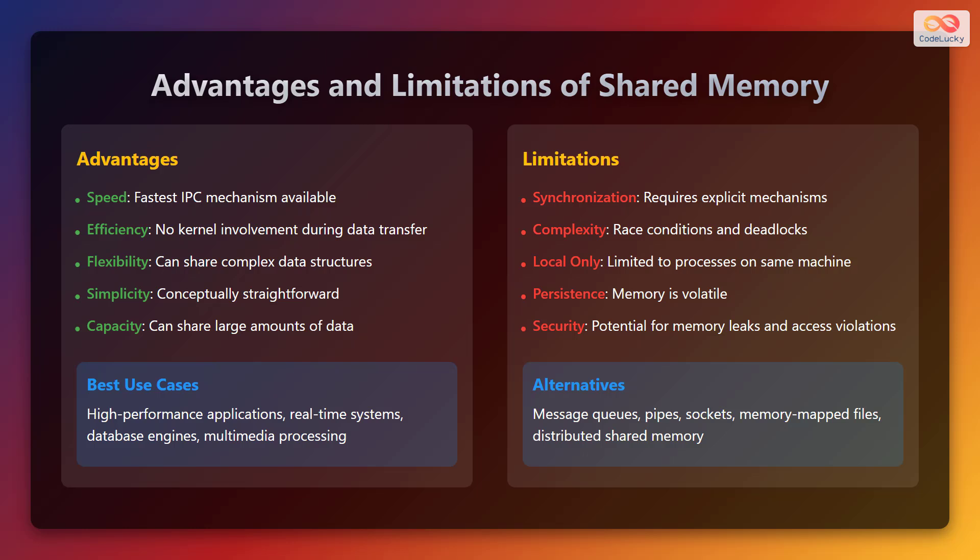Advantages of shared memory. Shared memory is the fastest inter-process communication mechanism available. It is efficient since there is no kernel involvement during data transfer. It has flexibility to share complex data structures, is simple and conceptually straightforward, and has the capacity to share large amounts of data. It is best suited for high-performance applications, real-time systems, database engines, and multimedia processing.